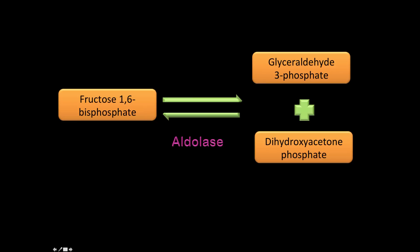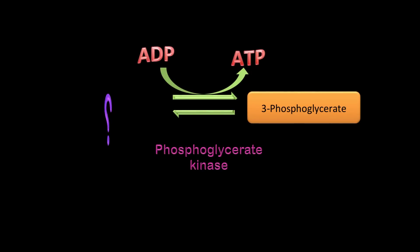What is the significance of why we say fructose-1,6-bisphosphate? Do you know the difference between 'bis' and 'di'? Both mean two phosphates, but 'bis' means the two phosphates are on two different carbons — in fructose-1,6-bisphosphate, one phosphate is on carbon one and the other is on carbon six. If it were 'diphosphate,' both phosphates would be on the same carbon, which is not the case here.